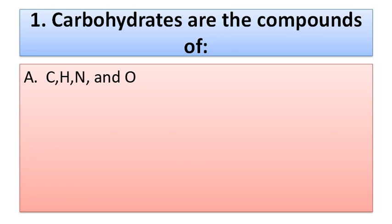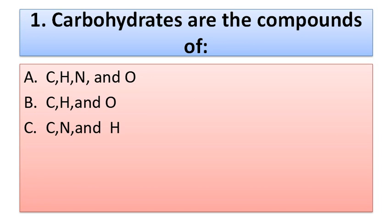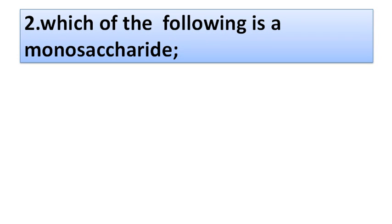The first question is: carbohydrates are the compounds of — option A: carbon, hydrogen, nitrogen and oxygen; option B: carbon, hydrogen and oxygen; option C: carbon, nitrogen and hydrogen; option D: nitrogen, hydrogen and carbon. As you know, carbohydrates are the compounds of carbon, hydrogen and oxygen, so option B is the correct one.